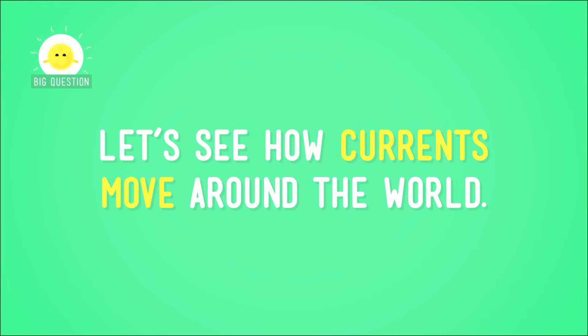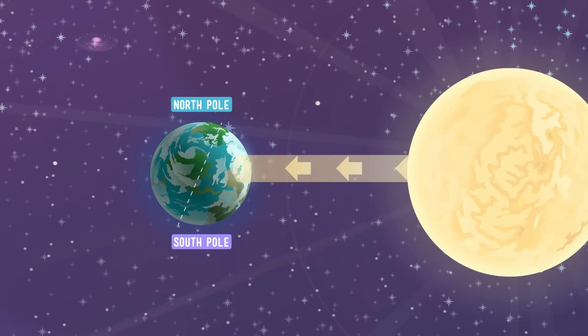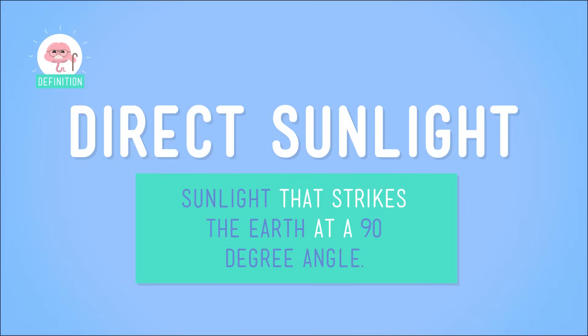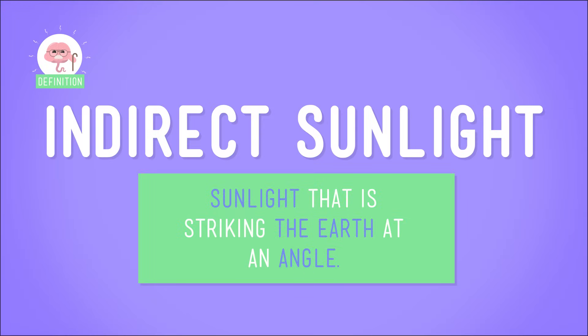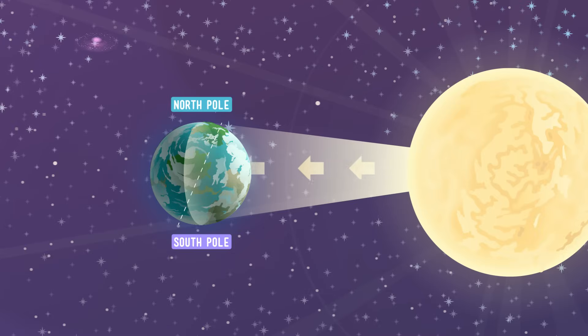Let's see how currents move around the world. The Earth is a sphere, so the sun's rays hit the middle of the Earth straight on — this part of the Earth receives direct sunlight. Meanwhile, Earth's poles receive indirect sunlight, or sunlight coming in at an angle, where the light is spread out over a larger area and is less intense.